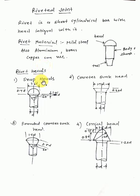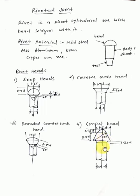Now, different types of rivet heads — here different rivet heads are shown with their shapes. This is a snap head, this is a countersunk head, and here the standardized dimensions are given. There is also a rounded countersunk and conical head. The diameter shown is the cylindrical bar diameter, and this dimension is 1.6D.